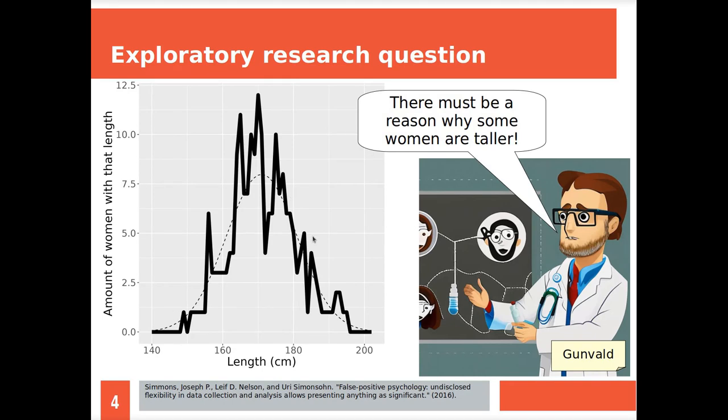The dashed line, which is a nice curve, is what you would expect to find if you measured an infinite amount of women. What Gunvald measured from these 1000 women has more ups and downs, it's not as ideal or perfect. He only measured 1000 women, but this is just by chance and we accept that as a fact of life. Gunvald wants to find out why some women are taller than others, why there are some women above 190 and some below 150.